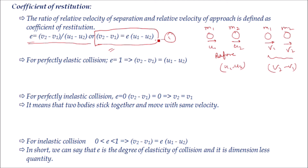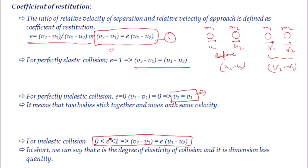For perfectly elastic collision, e = 1, so velocity of separation equals velocity of approach. For perfectly inelastic collision, the two bodies stick and move as a single unit, so e = 0 and V₁ = V₂. For inelastic collision (between perfectly elastic and perfectly inelastic), e lies between 0 and 1. The coefficient of restitution e is a measure of the degree of elasticity of a collision and is dimensionless.